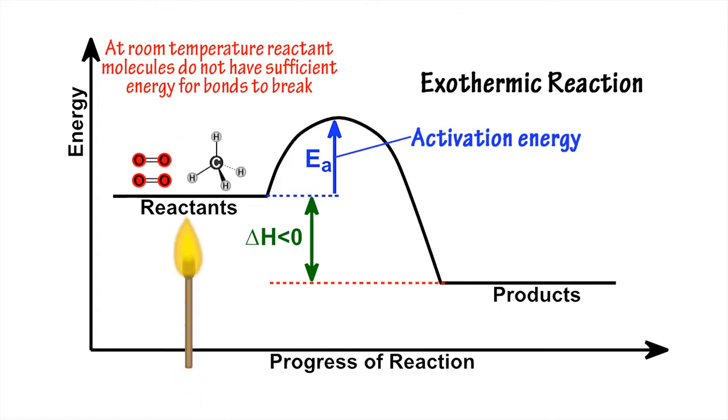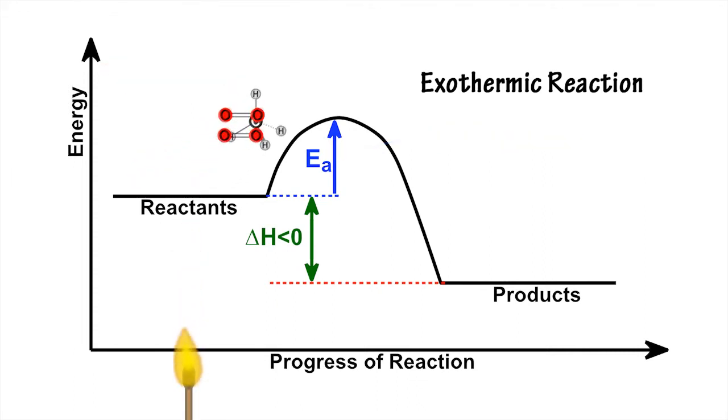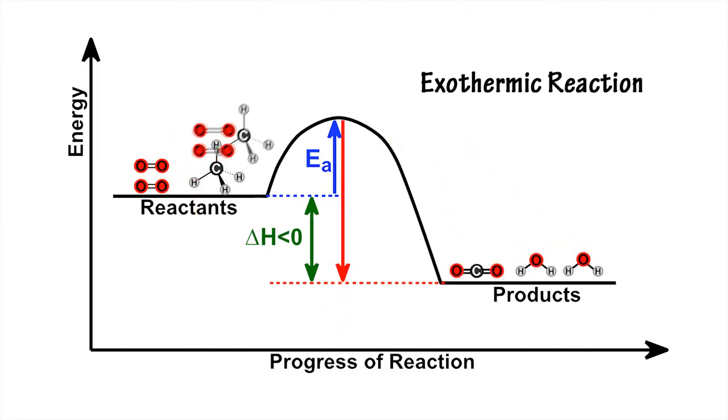A spark or the flame from a match can supply the energy necessary to get some molecules of methane and oxygen over the activation barrier. Some of the energy then released in the formation of carbon dioxide and water can then be recycled back into the system to start a chain reaction.